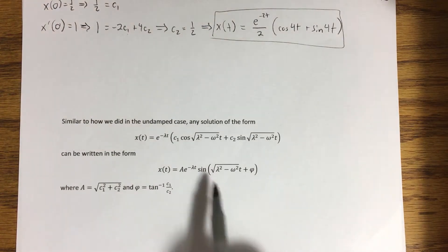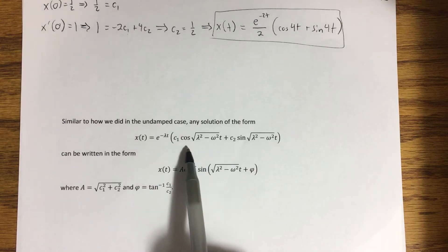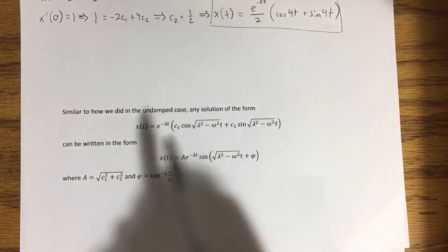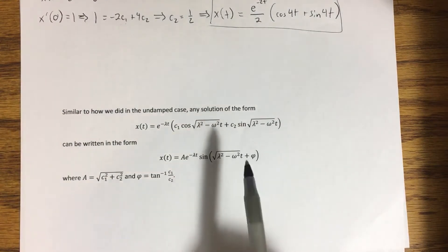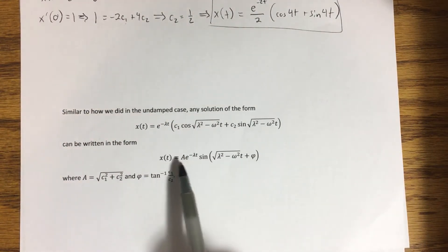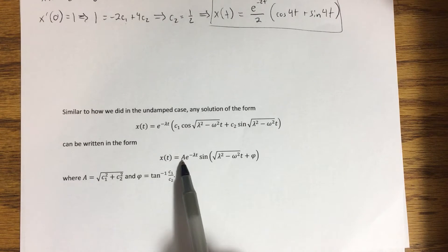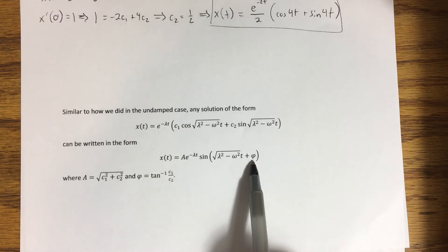Now, it's still of value to us to write this kind of in a sinusoidal-esque form. So using what we did in the undamped motion case, we could derive the same stuff and show that this equation can be put into this form, where once again we have A and this phase angle, phi.